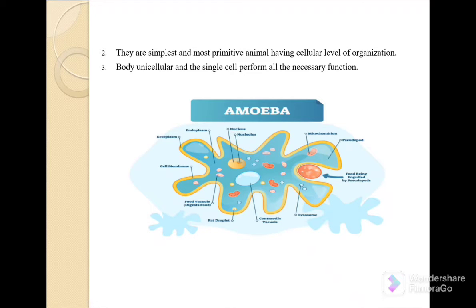The third characteristic is that the body is unicellular, and a single cell performs all the necessary functions. Unicellular means only one cell is present — not many like in human beings, which are multicellular. The whole body of these organisms is made of only one cell, and that single cell performs all functions such as feeding, respiration, and excretion of waste materials.